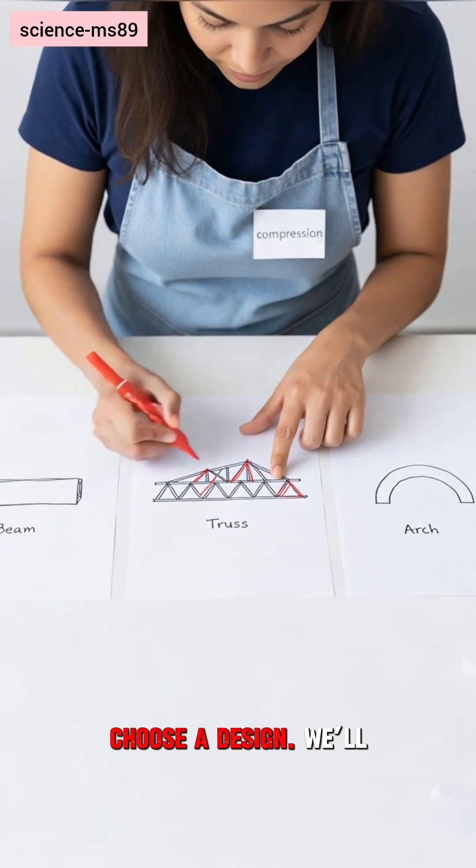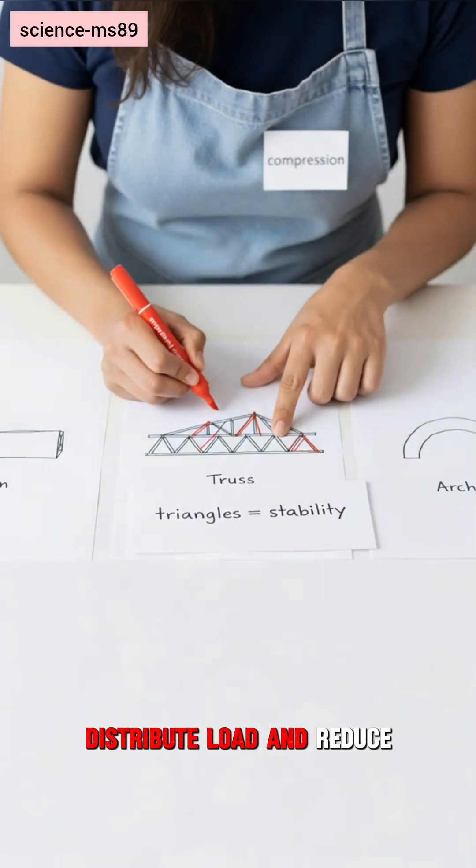Choose a design. We'll build a truss. Triangles distribute load and reduce bending.